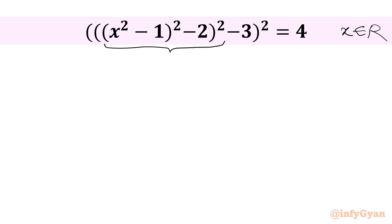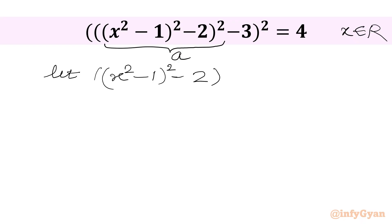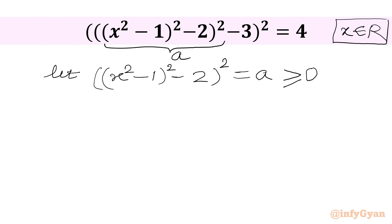I will consider this expression equal to a, so I will write: (x² - 1)² - 2)² = 8. For x to be real, a square cannot be negative, so I will write here: a must be greater than or equal to 0. Now we will check after this substitution.